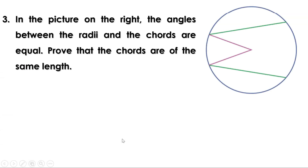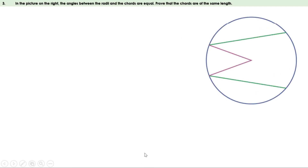Third problem: In the picture, the angles between the radii and the chords are equal. Prove that the chords are of the same length. Let us take the figure and name the chords AB and CD, with center O. Given that the angles between the radii and the chords are equal, these two angles are equal. Now let us draw perpendiculars from the center to the chords.